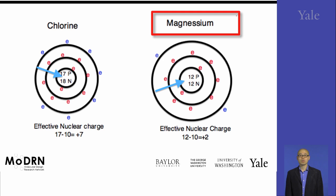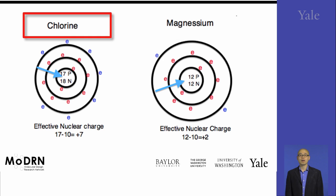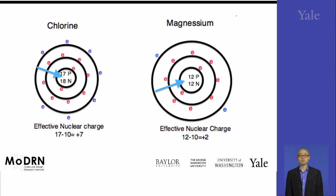One is magnesium, the other one is chlorine. They are on the same period. The major factor that determines the atomic radii is the interaction between the valence electron and the effective nuclear charge. The valence electrons are defined to be the electrons orbiting on the outermost shell of the electron shells.